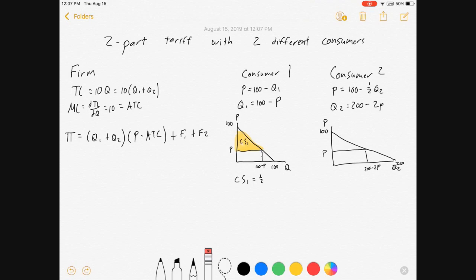The consumers each have consumer surplus on the graph. Consumer surplus for consumer 1 is 1/2 times base times height, which comes out to being 1/2 times (100 - P) squared. Consumer 2 has consumer surplus equal to (100 - P) squared.